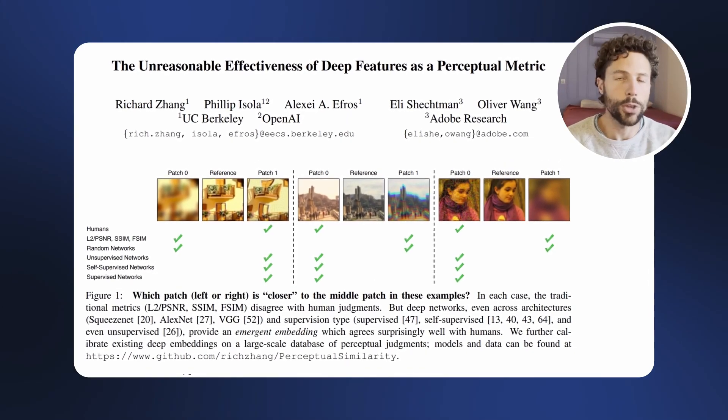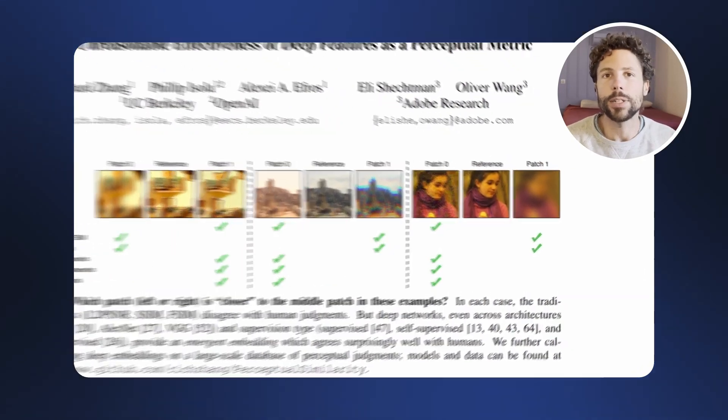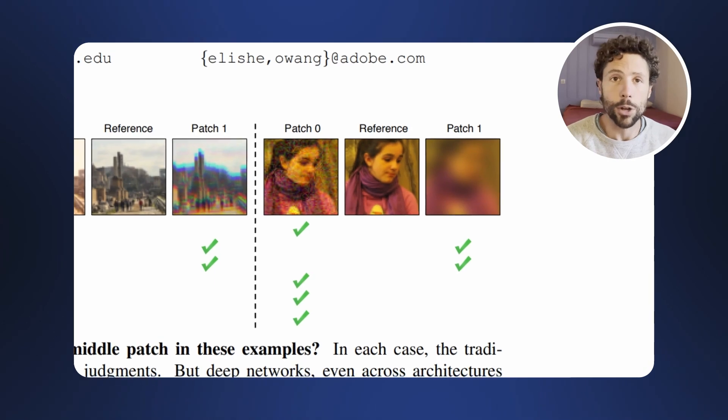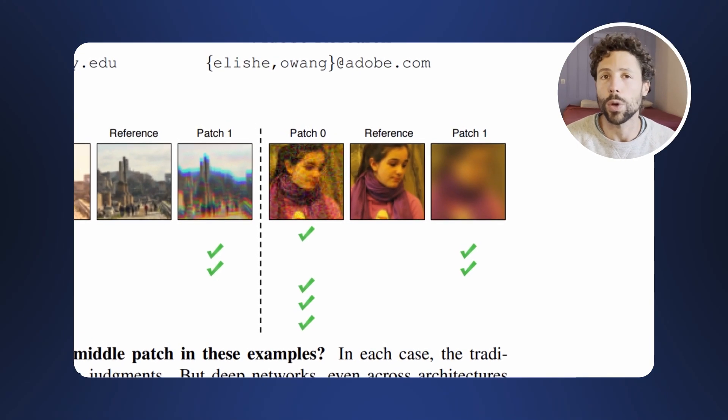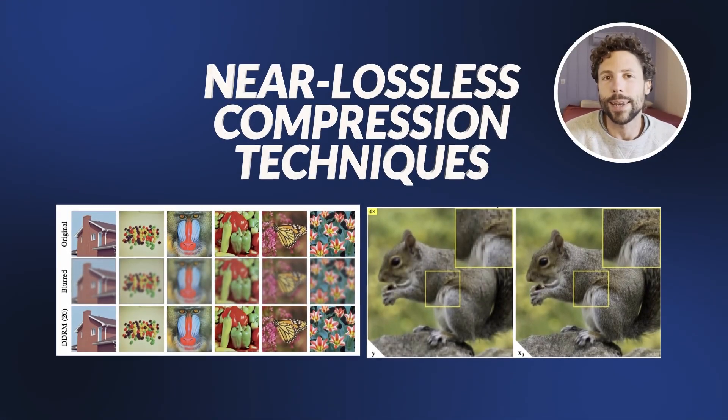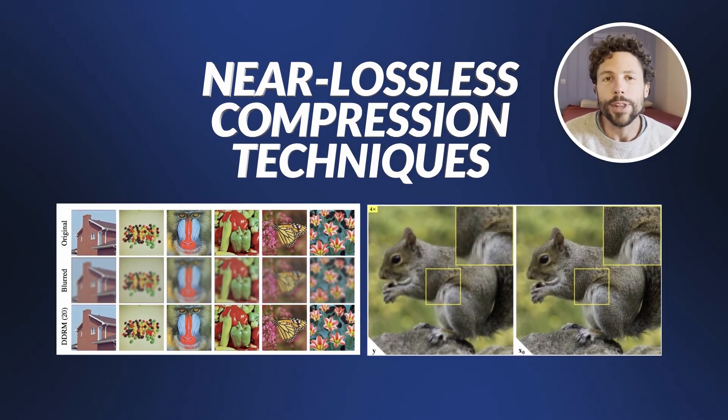Neural compression takes a fundamentally different approach. Instead of following fixed rules about what humans can and can't hear, it learns patterns directly from the data and can compress audio in a way that preserves what matters most to human perception. When these models are combined with iterative denoising or diffusion models for upscaling resolution, or other super-resolution techniques inspired by the computer vision domain, they can recreate data with extremely high faithfulness to the original, potentially leading to new and flexible near-lossless compression techniques.